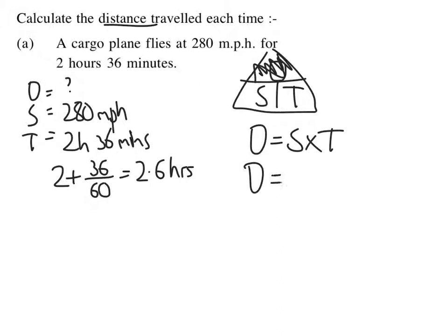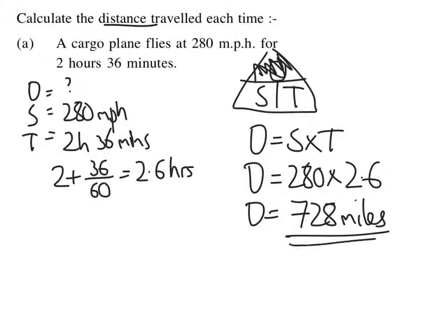Substitute in my numbers. Speed is 280. Time is 2.6. Put that into my calculator, and I get 728. And as it's miles per hour, that must mean my distance is miles. So 728 miles.